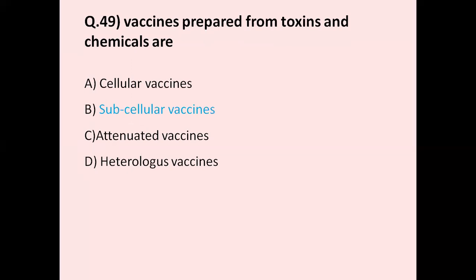Question number 49: Vaccines prepared from toxins and chemicals — option A cellular vaccines, option B sub-cellular vaccines, option C attenuated vaccines, option D heterologous vaccines. The correct answer is sub-cellular vaccines.